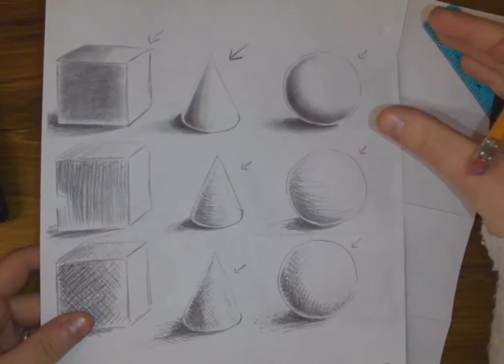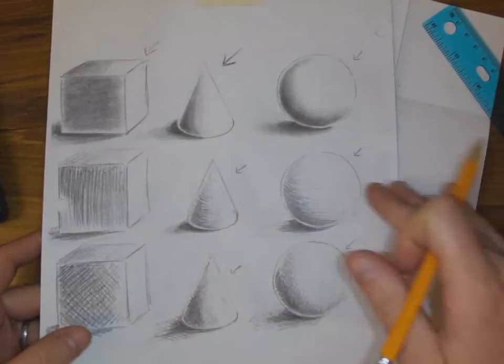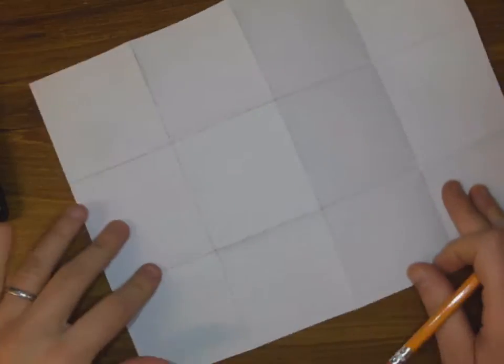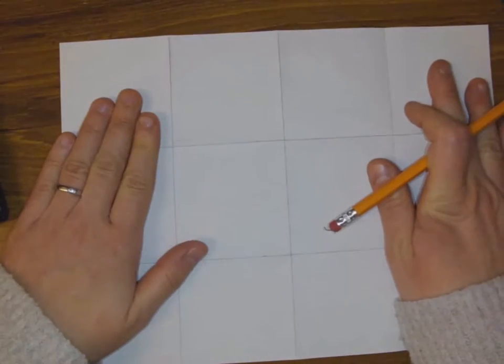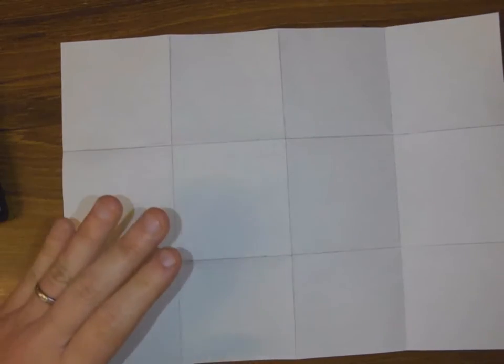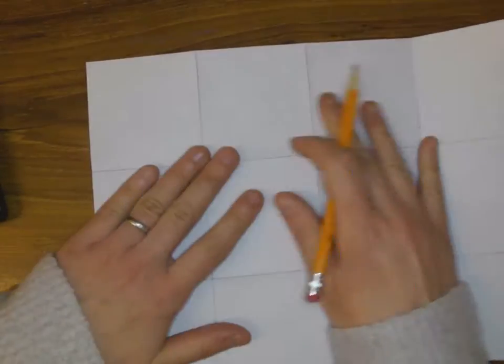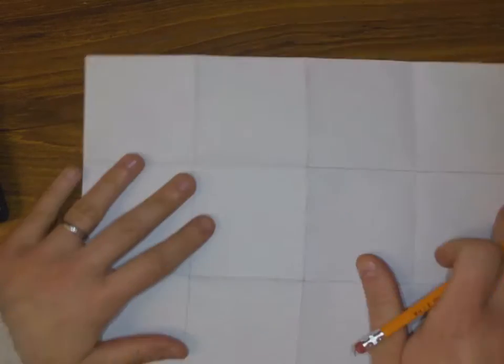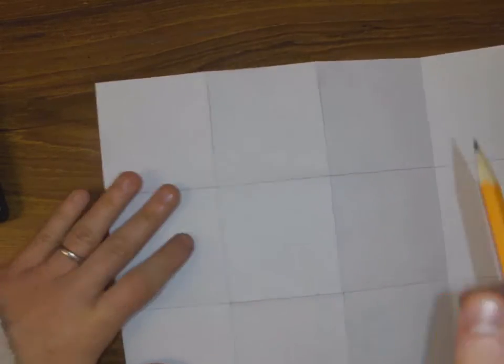So rather than doing it this way, because I'm adding the cylinder, I'm going to do four, four, and four. I'm actually going to turn my paper to the horizontal layout, kind of to landscape as opposed to profile, because that gives me four, four, and four.